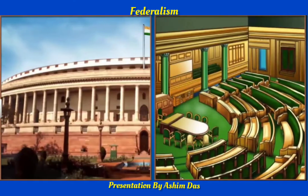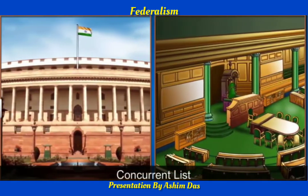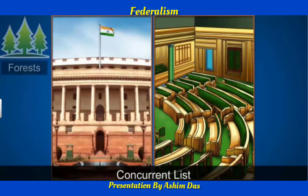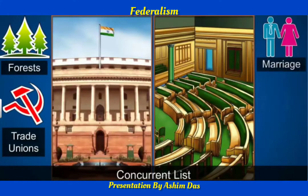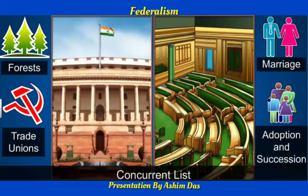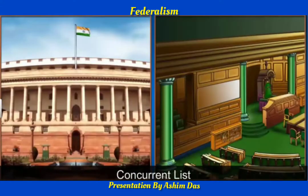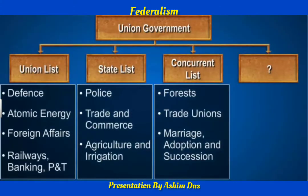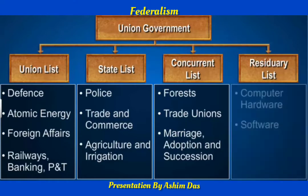The third list is the concurrent list, which includes subjects of common interest to both the union and state governments, for example forests, trade unions, marriage, adoption, and succession. Both the union and state governments can make laws on the concurrent list, but in case of conflict, the laws by the union government are given more importance. Subjects that do not fall under any of the lists, or came up after the constitution was made, are known as residuary subjects — for example, computer hardware and software. The union government has the power to make laws on these residuary subjects.